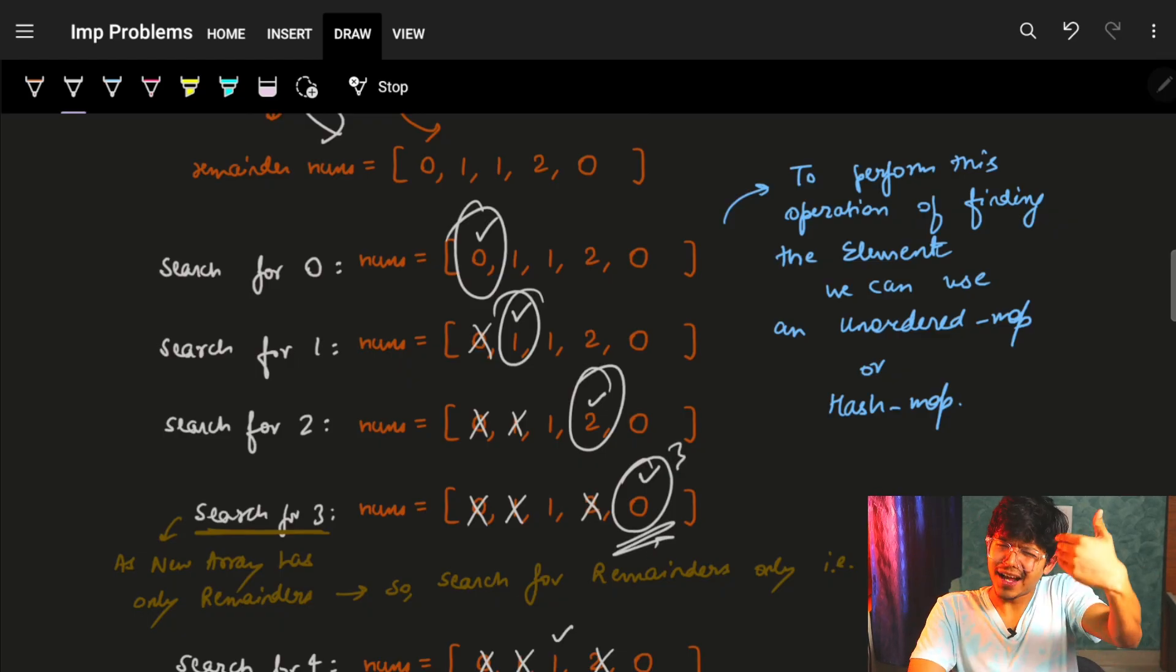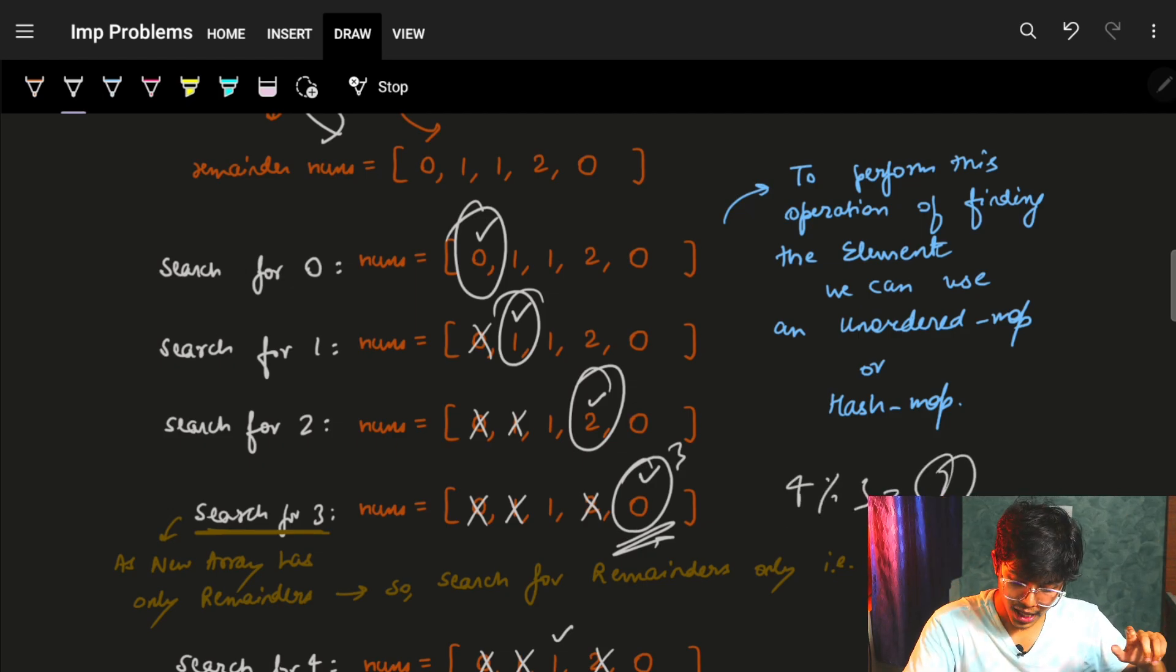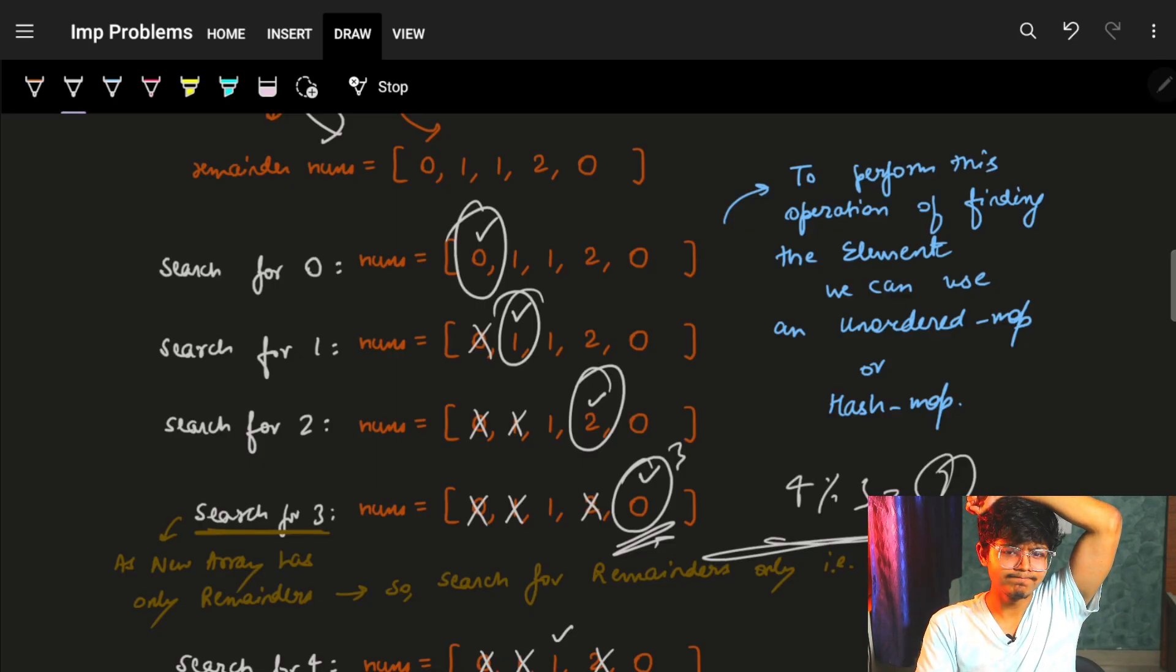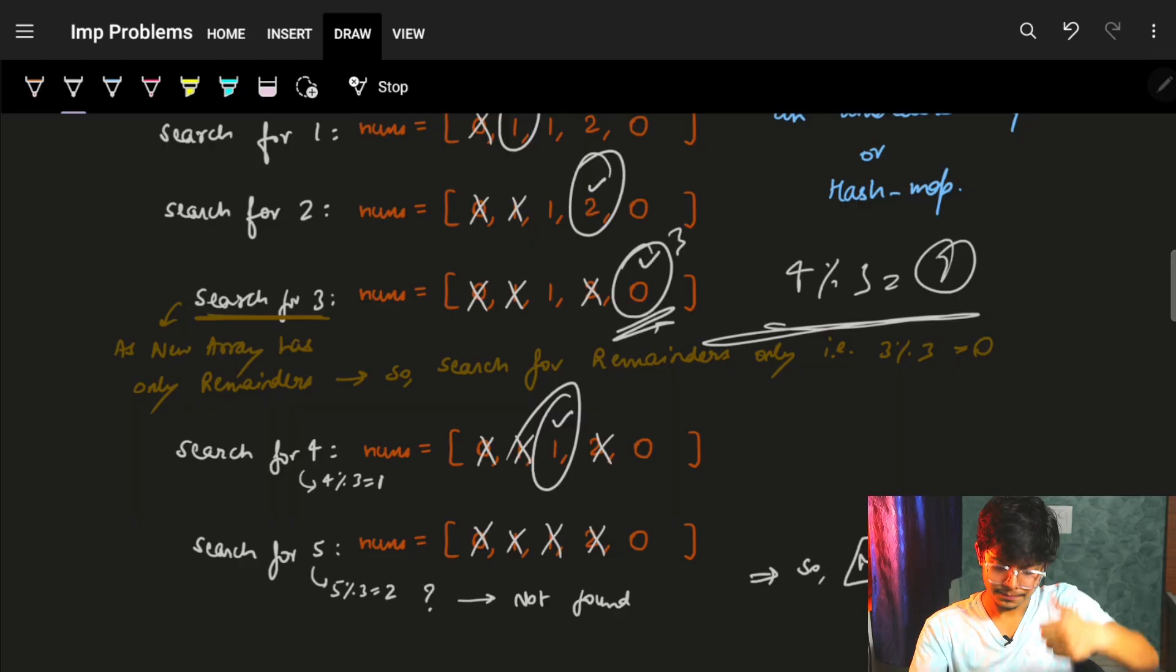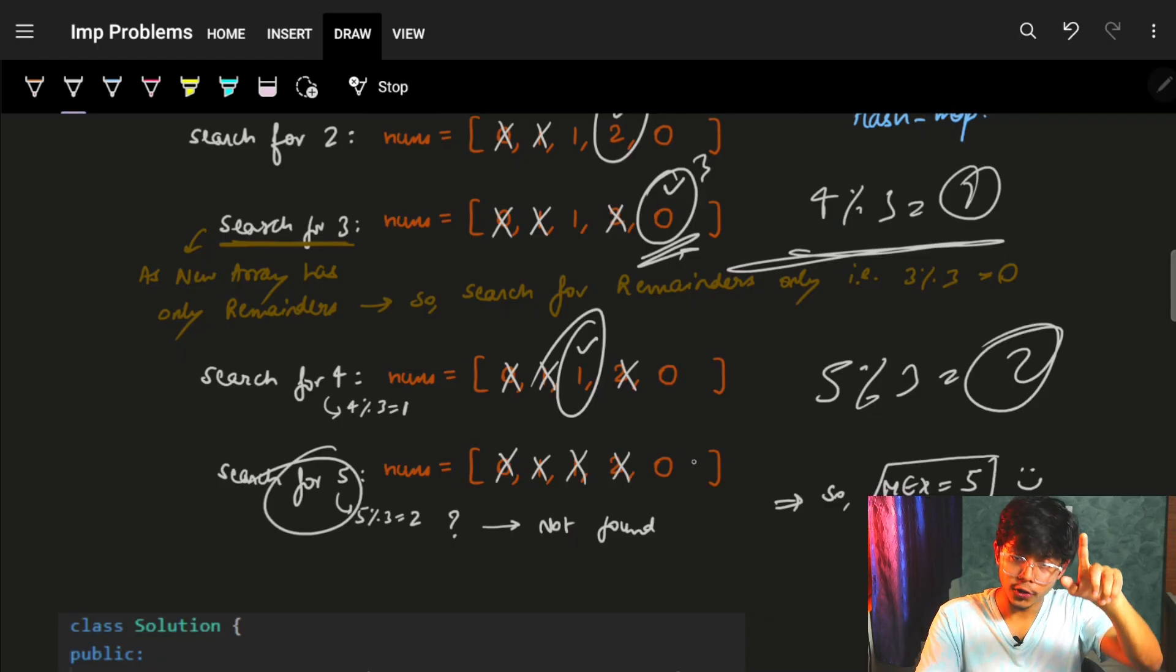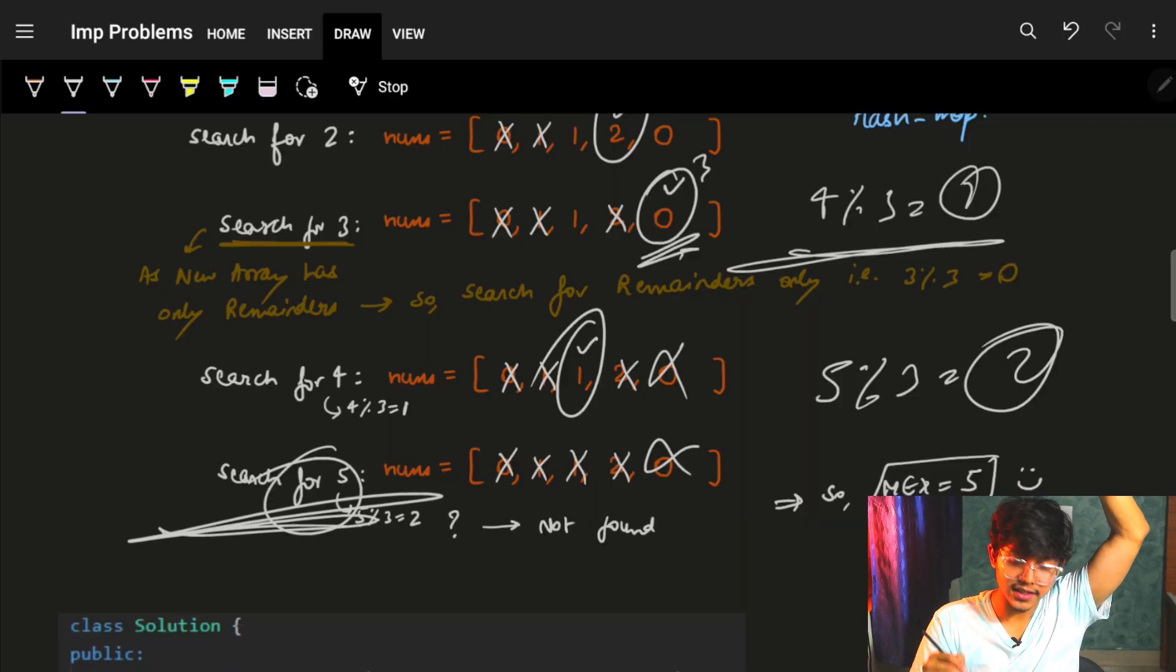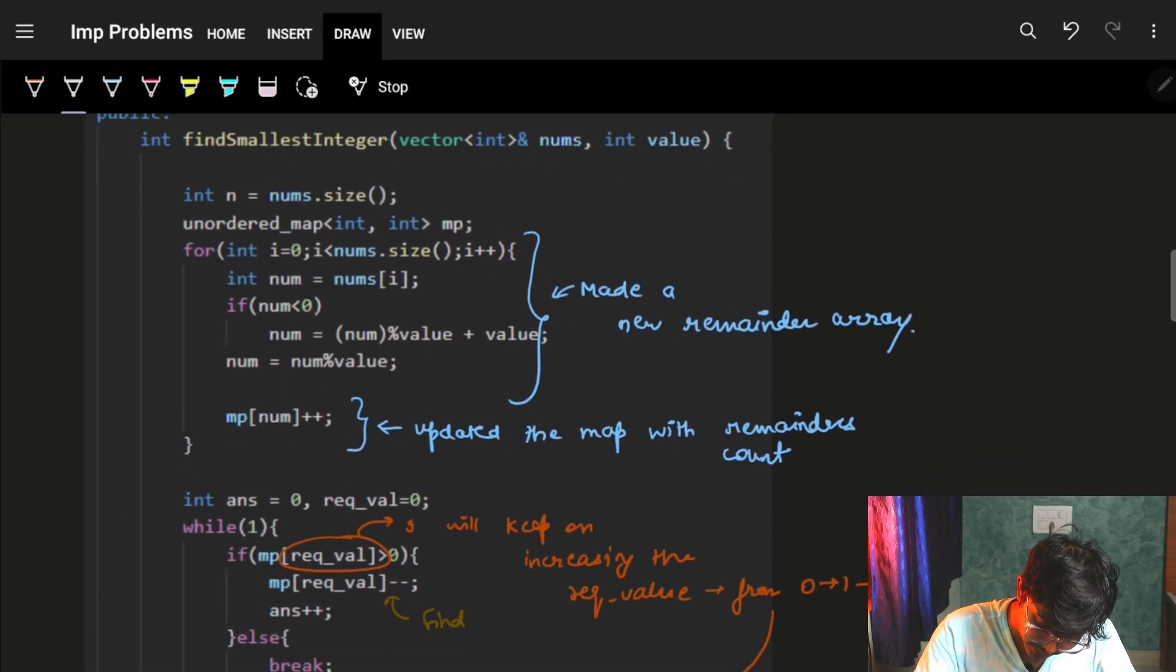Next, it was for 3. Next, I need to search for 4. Rather than searching for 4, let's search for 4 mod 3. I need to search for 1. Because I have brought every number down to the minimum value. And it is the minimum value which I need to get. Is 1 present? Yes, it is. I just got a 1. I just search for 5. Search for 5 mod 3, which is 2. Search for 2. Is 2 present? It's gone. 2 is not present. So my MEX is nothing but 5.